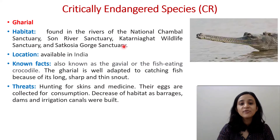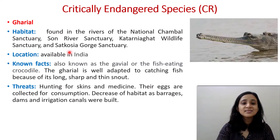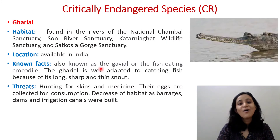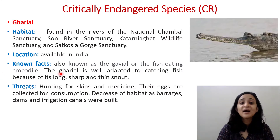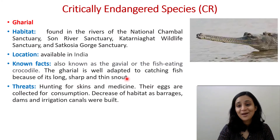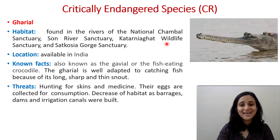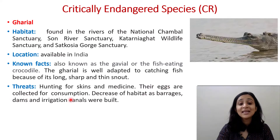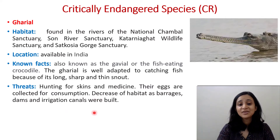The Gharial is also under Critically Endangered. Its habitat is found in rivers of the National Chambal Sanctuary, Son River Sanctuary, Katarniaghat Wildlife Sanctuary, and Satkosia Gorge Sanctuary, located in India. Also known as the fish-eating crocodile, the gharial is well adapted to catching fish because of its long, sharp, and thin snout. Threats include hunting for skins and medicine, egg collection for consumption, and decrease of habitat as barrages, dams, and irrigation canals were built.